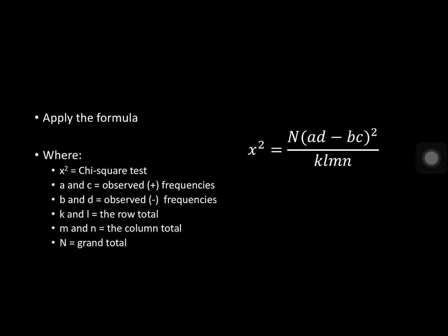This is the formula we are going to use — the chi-square test. N is the grand total. A and C are the observed frequencies (plus frequencies). B and D are the minus frequencies. KL is the row total, and MN are the column totals.